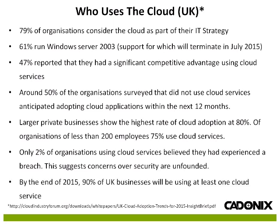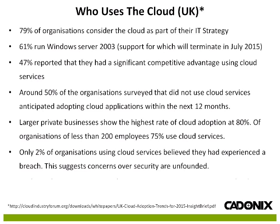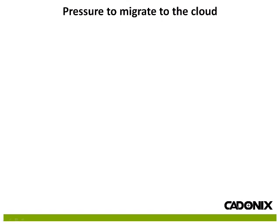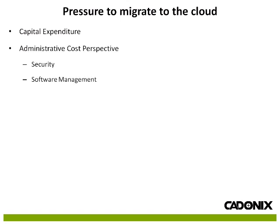By the end of 2015, 90% of UK businesses will be using at least one cloud service, showing we are shifting to the cloud in a big way. The clearest pressure to migrate is capital expenditure — not having to buy servers, provide air conditioning, and server racks is a great incentive. People cost a lot of money in the UK, and skilled people needed to maintain your infrastructure cost the most. You can also reduce administration costs by not having to worry about security and all the antivirus software you need to install.